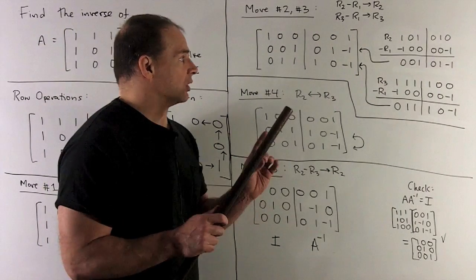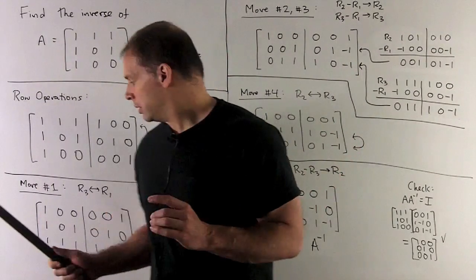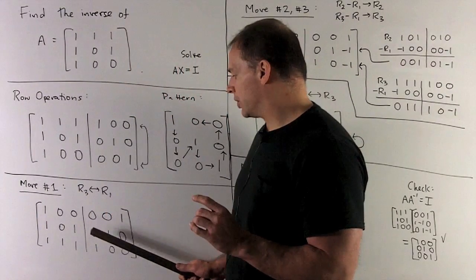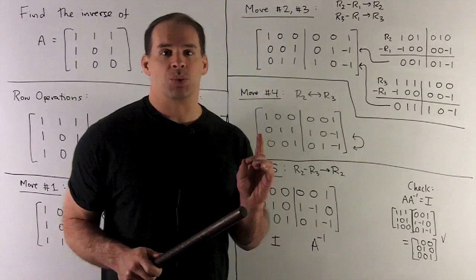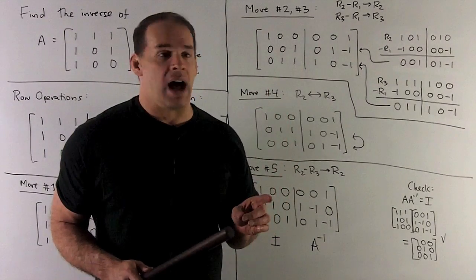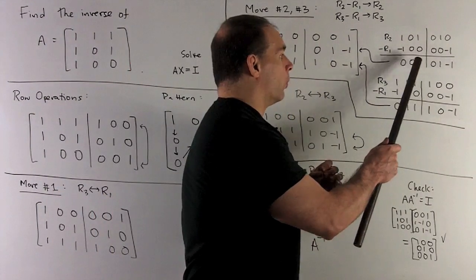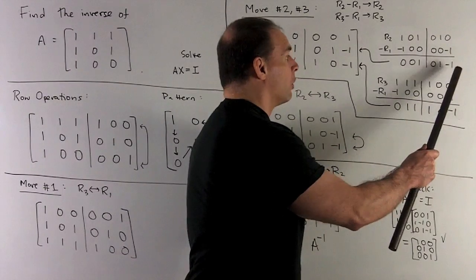Now, let's take a look. So I take row 2, that's going to be 1, 0, 1, 0, 1, 0, and subtract off row 1. So that's going to be minus 1, 0, 0, 0, 0, minus 1. We add down the columns, I get 0, 0, 1, 0, 1, minus 1, and that's my new row 2.